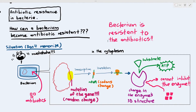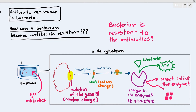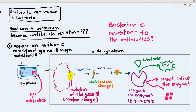To put it simply, how a bacterium can become antibiotic resistant: number one, by acquiring an antibiotic resistant gene through mutation. That particular gene that has undergone mutation is referred to as an antibiotic resistant gene. Antibiotic resistant genes usually form due to random mutation.